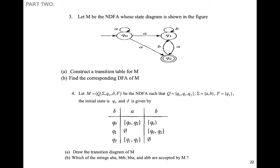And here we come to the end of non-deterministic finite automata. You can measure your understanding by solving these two questions: the first gives a state diagram where you need to construct the transition table and find the corresponding DFA; the second gives a transition table where you need to draw the diagram and determine which strings — ABA, BBB, and ABB — are accepted. A string is accepted by a machine if it reaches the accepting state or final state.